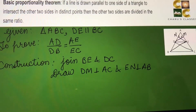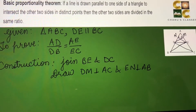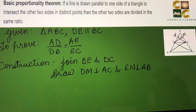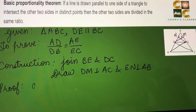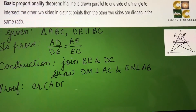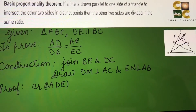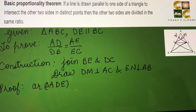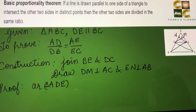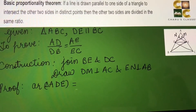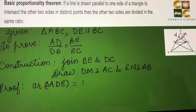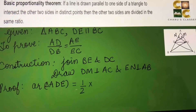Now our construction is complete and we can begin with the proof. First we will find the area of triangle ADE. Area of a triangle is half base into height. For triangle ADE, taking the base as AD, the height or altitude is EN. So area of triangle ADE = (1/2) × AD × EN. This is equation 1.